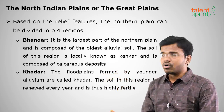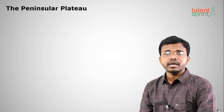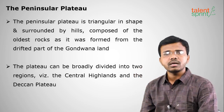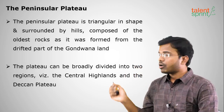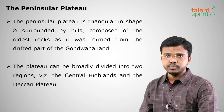The next physiographic division is the Peninsular Plateau. A peninsula is land surrounded by water on three sides; an island is surrounded on all four sides. India's southernmost region is a peninsula, flanked by the Indian Ocean, Arabian Sea, and the Bay of Bengal. The Peninsular Plateau was formed from a drifted part of Gondwana Land, as explained in Alfred Wegener's continental drift theory. It is divided into two parts: the Central Highlands and the Deccan Plateau.